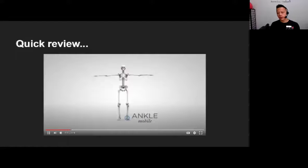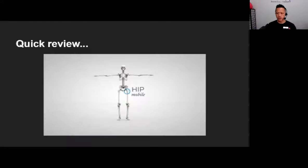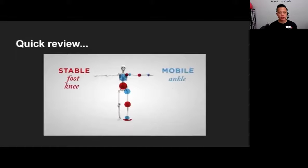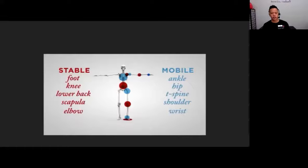A quick review of the joint-by-joint approach. The body functions on this alternating pattern of stability and mobility. If that pattern is disrupted, pain and injury is the result. What we're most concerned with today is going to be the foot, the stable segment. It should be stable so that we can push and move off of that stable segment. And then the ankle should be mobile. The foot can become mobile or unstable and the ankle can become stable or less mobile. We don't want that.